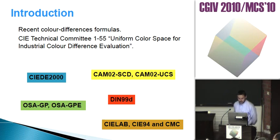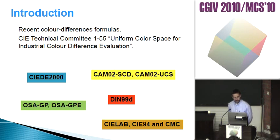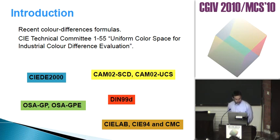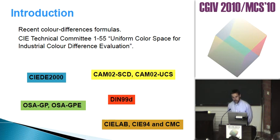We are going to take into account Delta E 2000 and also new formulas: CAM02 fit for small color differences, CAM02 fit for uniform color space for all differences (small and large), DIN99D, and the formulas OSA-GP and OSA-Euclidean-GP. Also, I am going to consider CIELAB, CIE94, and CMC as historical formulas for comparison.